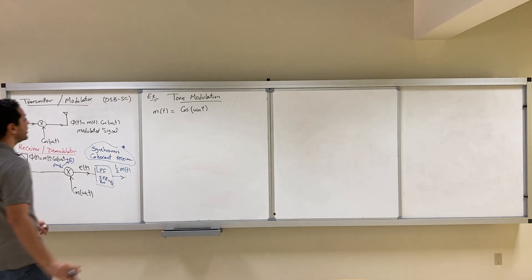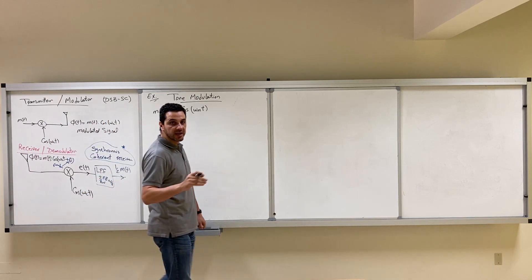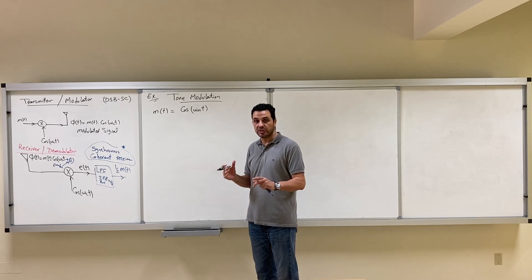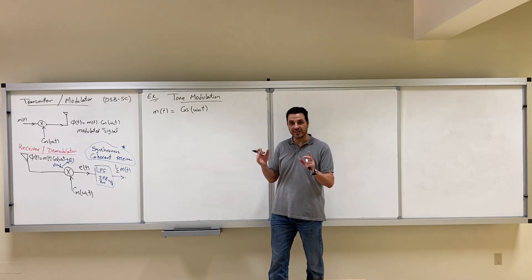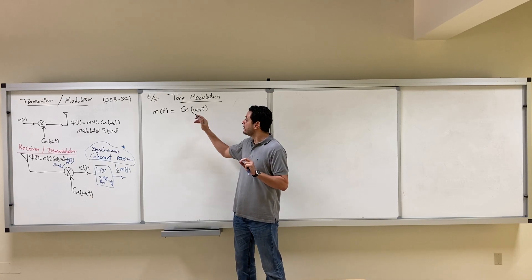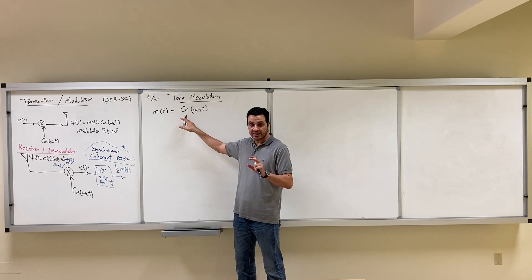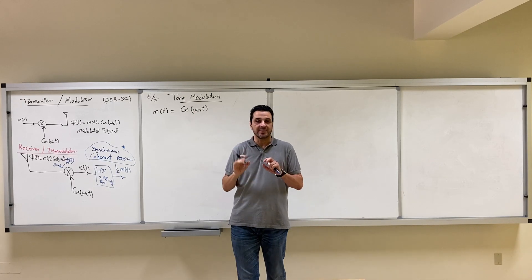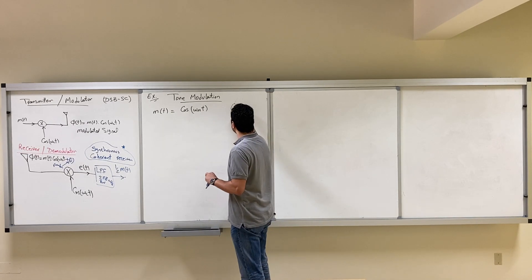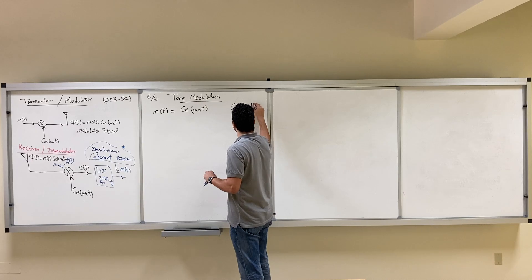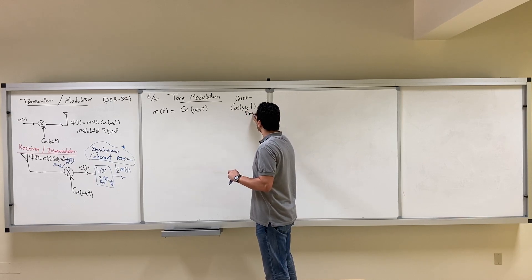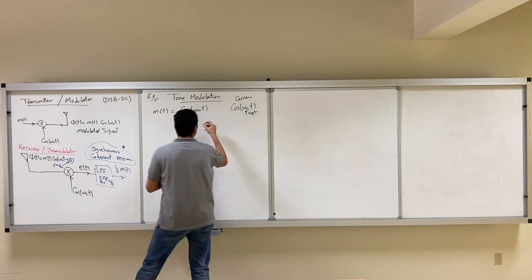In this video we are going to apply what we learned in the double sideband suppressed carrier modulation on an example called tone modulation. Tone modulation means that our message signal is assumed to be a single tone — a cosine wave itself. This is our information signal, our baseband signal. The carrier is cosine omega_C t with a high frequency, while our message is also cosine but with a low frequency.